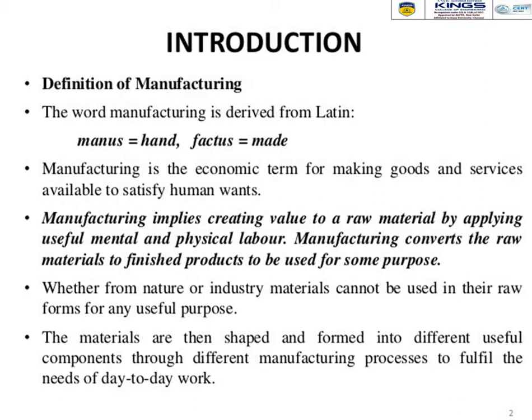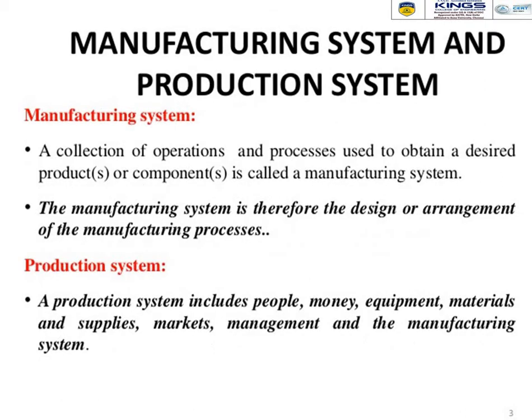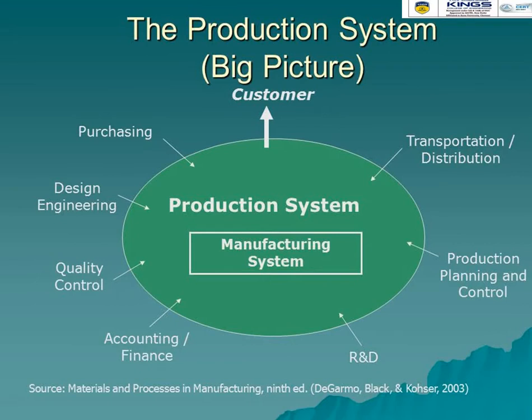Manufacturing is the process of removing excess material from a work piece in order to achieve the desired product. A manufacturing system is a collection of operations and processes used to obtain the desired product or component. The manufacturing system is the design or arrangement of manufacturing processes. The production system includes people, money, equipment, materials, supplies, markets, management, and the manufacturing system. Production starts from purchasing raw material and design engineering.